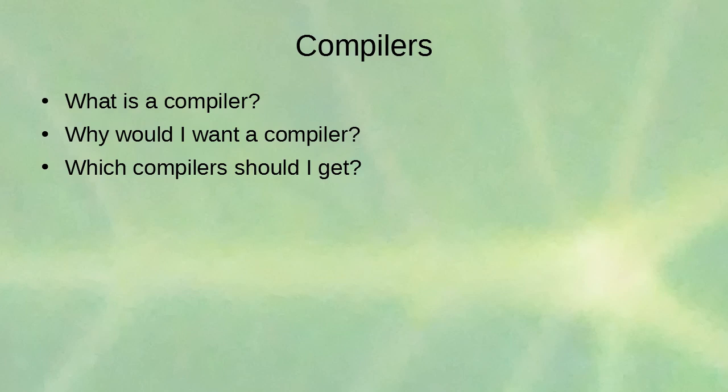You need a compiler every time you want to create binary files — whether you're downloading source code someone has provided or creating programs that aren't script-based. Which compiler should you get? That depends on what the source code is written for. The most common one on Linux systems is the GCC compiler — the GNU compiler — which is the one recommended unless the source code requires a specific compiler.